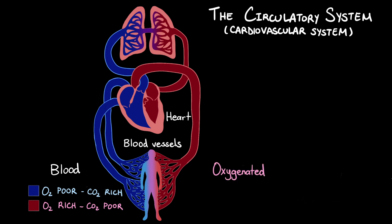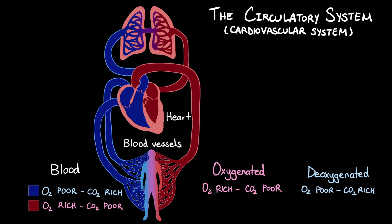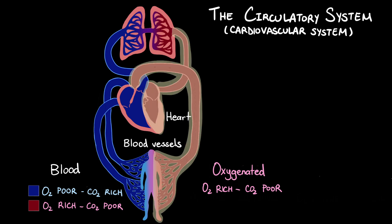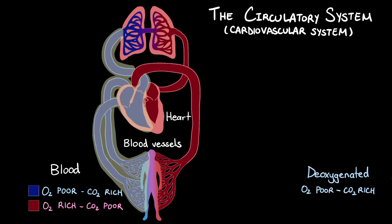Blood can be oxygenated or deoxygenated. Oxygenated blood is rich in oxygen and poor in carbon dioxide. Deoxygenated blood is poor in oxygen and rich in carbon dioxide. Whenever you see a figure with blood vessels, the convention is to use red to represent vessels that carry oxygenated blood, and blue to represent vessels that carry deoxygenated blood.